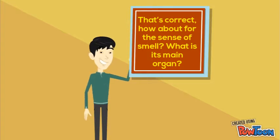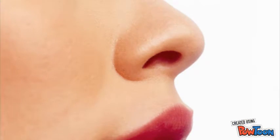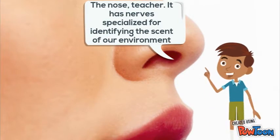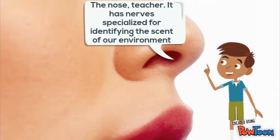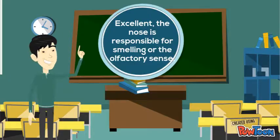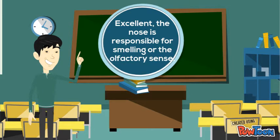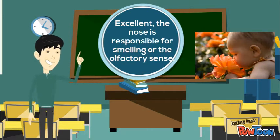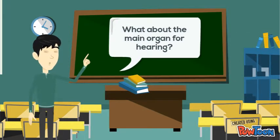The nose, teacher. It has nerves specialized for identifying the scent of our environment. Excellent. The nose is responsible for smelling or the olfactory sense. What about the main organ for hearing?